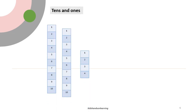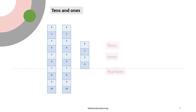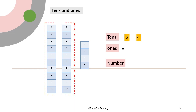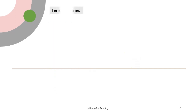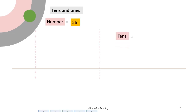Turkey. Tens and Ones. 2 tens, 4 ones. Number is 24.